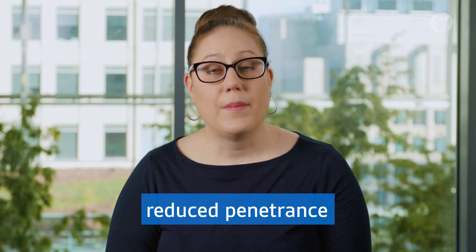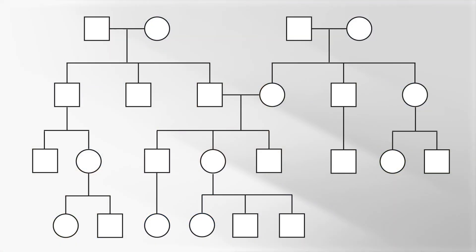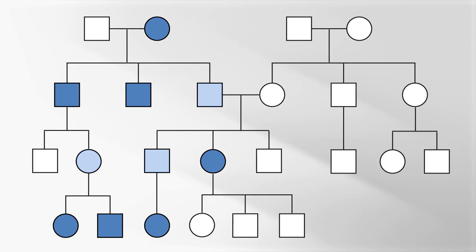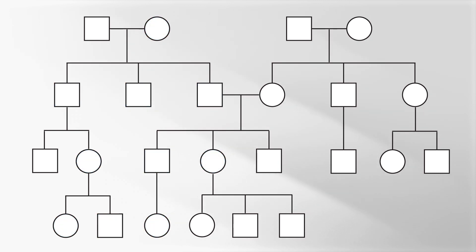What that might look like in a family is this. In addition, members of the same family may each have different symptoms. And finally, in some families, there is a new occurrence of a genetic condition.